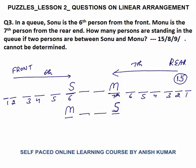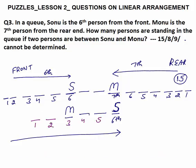But is 15 the final answer? No — you have to check the second arrangement as well. Again the same way: Sonu is the 6th person from the front, so 5 persons are to his left. This is the 1st, 2nd, 3rd, 4th, 5th guy — Sonu is 6th from the front end.